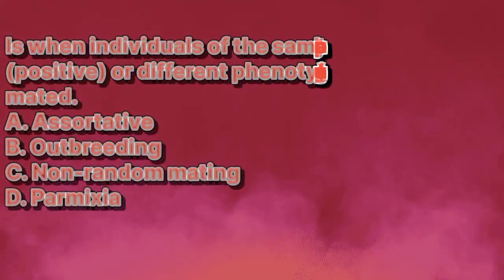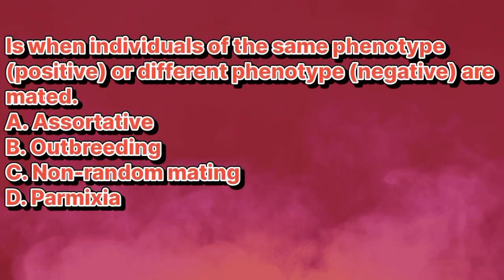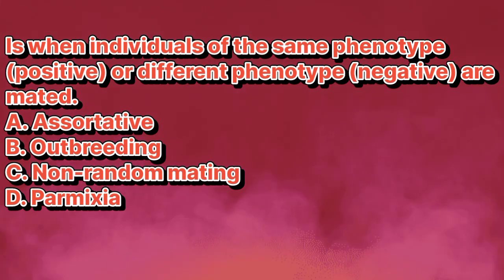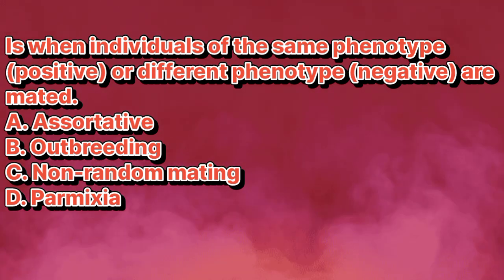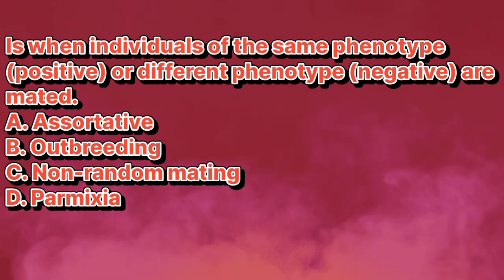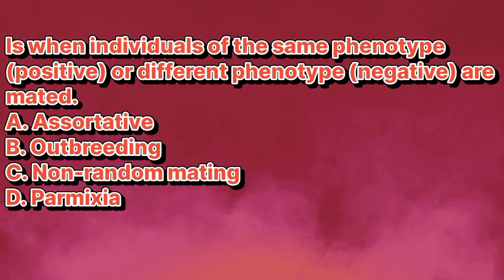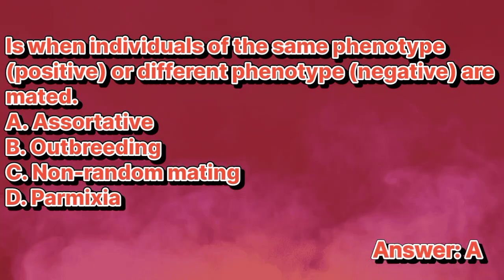What is it when individuals of the same phenotype (positive) or different phenotype (negative) are mated? A. Assertative. B. Outbreeding. C. Non-random mating. D. Pyrimidine. The answer is letter A.